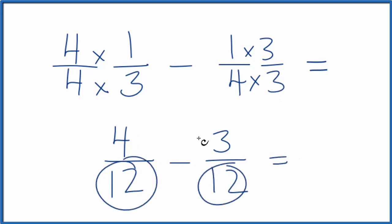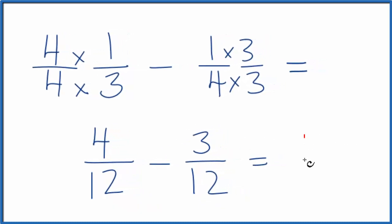Here all we need to do is subtract the numerators. 4 minus 3, that gives us 1, and we bring the 12 across. And 1/3 minus 1/4, that gives us 1/12. So that's how you find 1/3 minus 1/4.